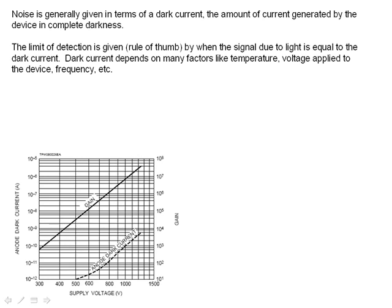And the dark current, of course, depends on many factors like temperature, the voltage applied to the device, frequency, and things like that. And we can see that the dark current is very small at low voltages but starts to increase just along with the gain at fairly high voltages, as can be shown in the curve down here.